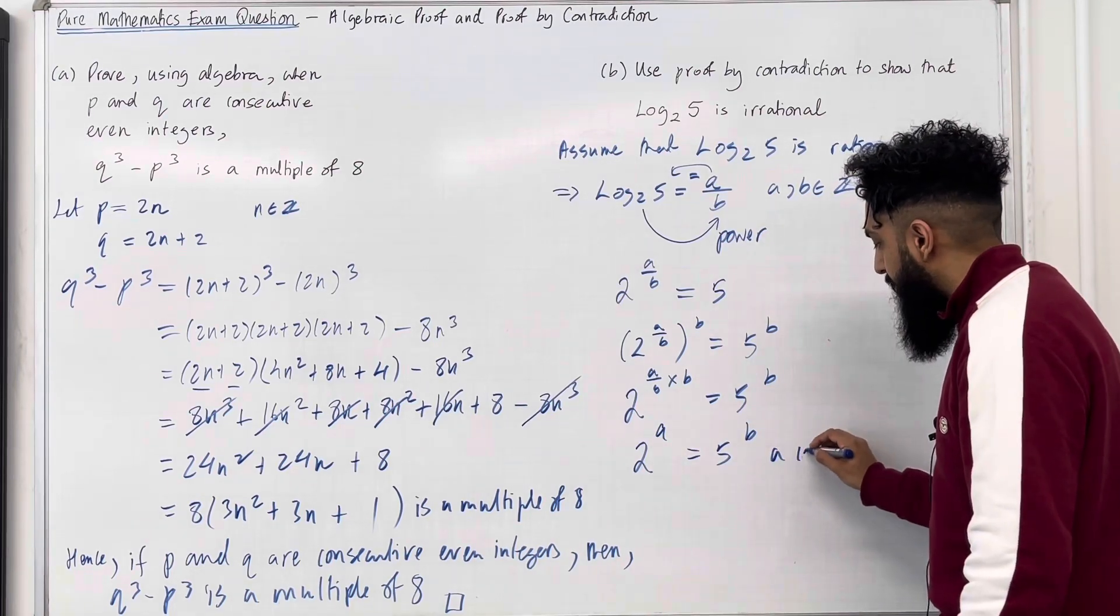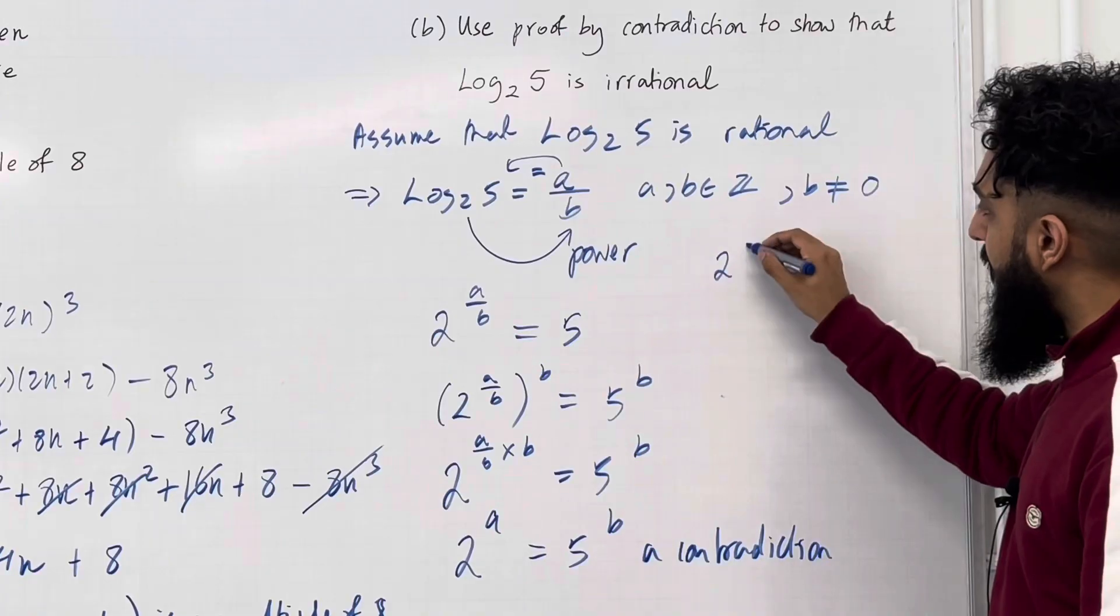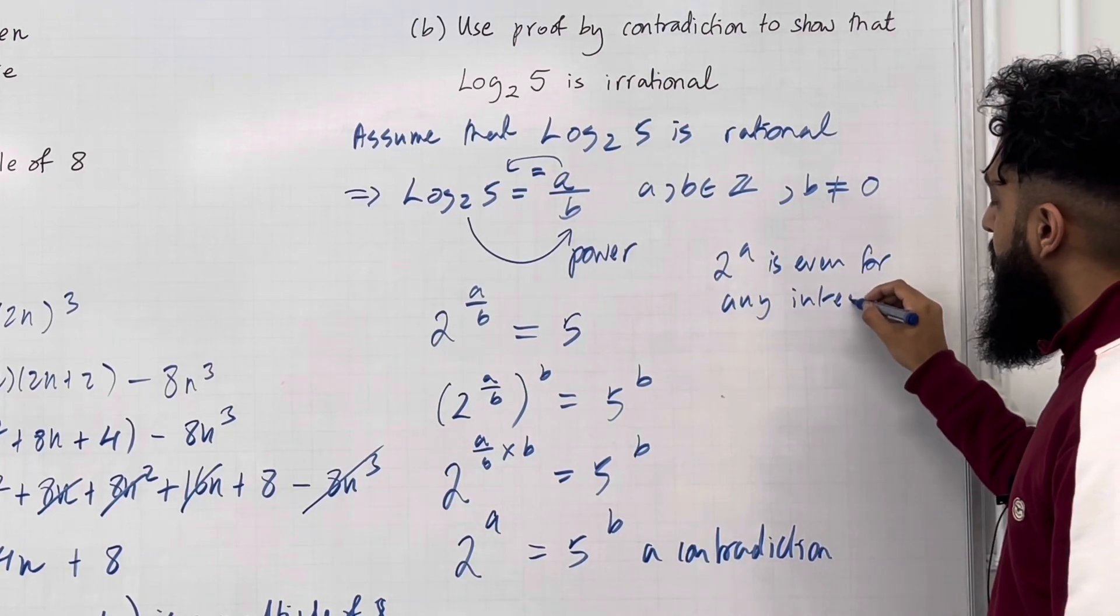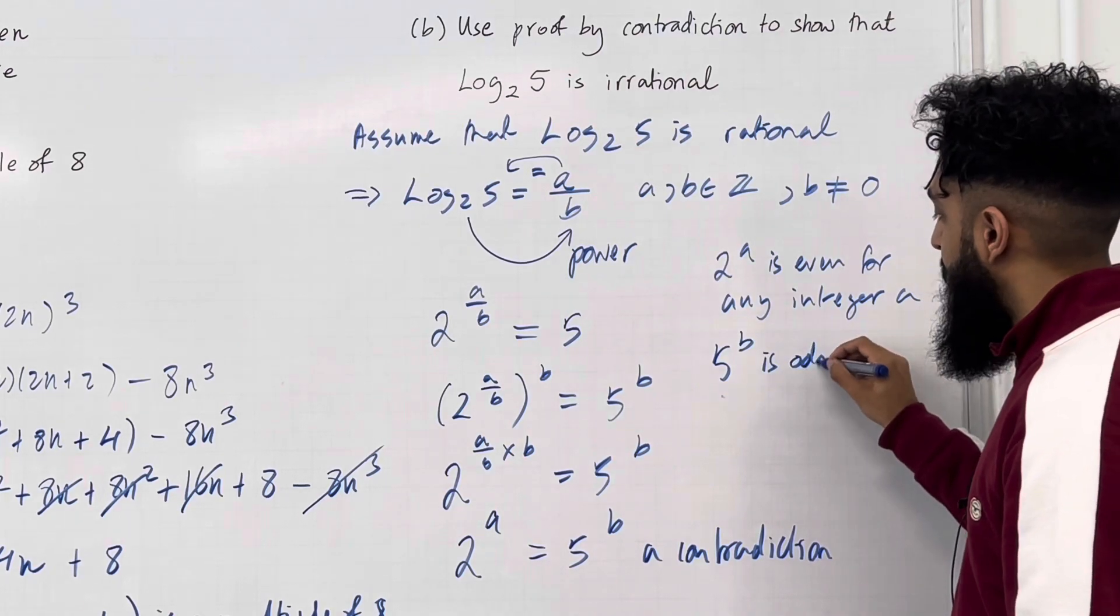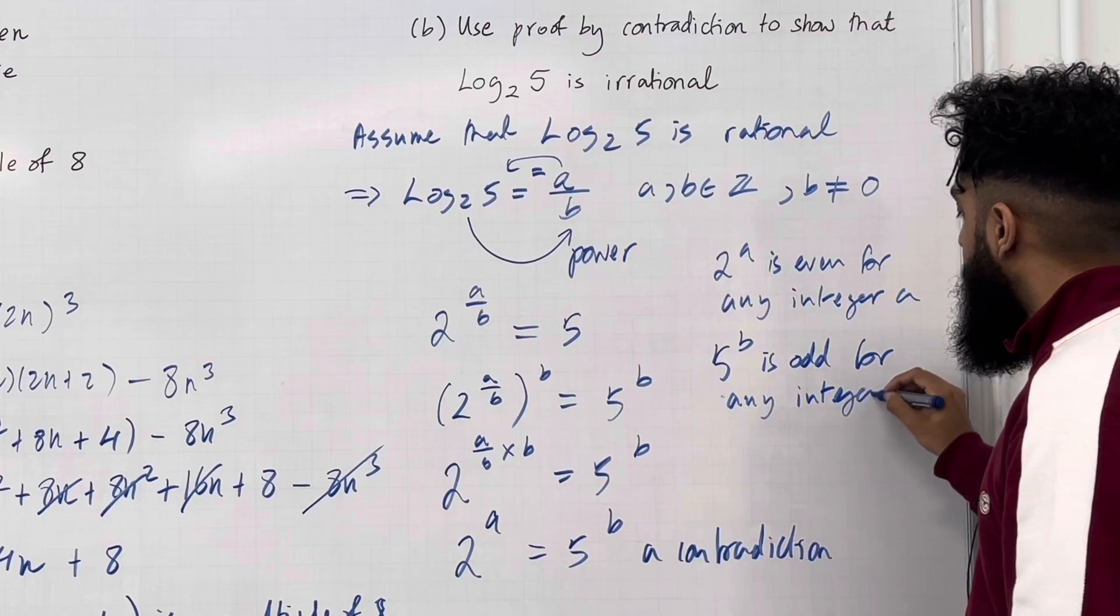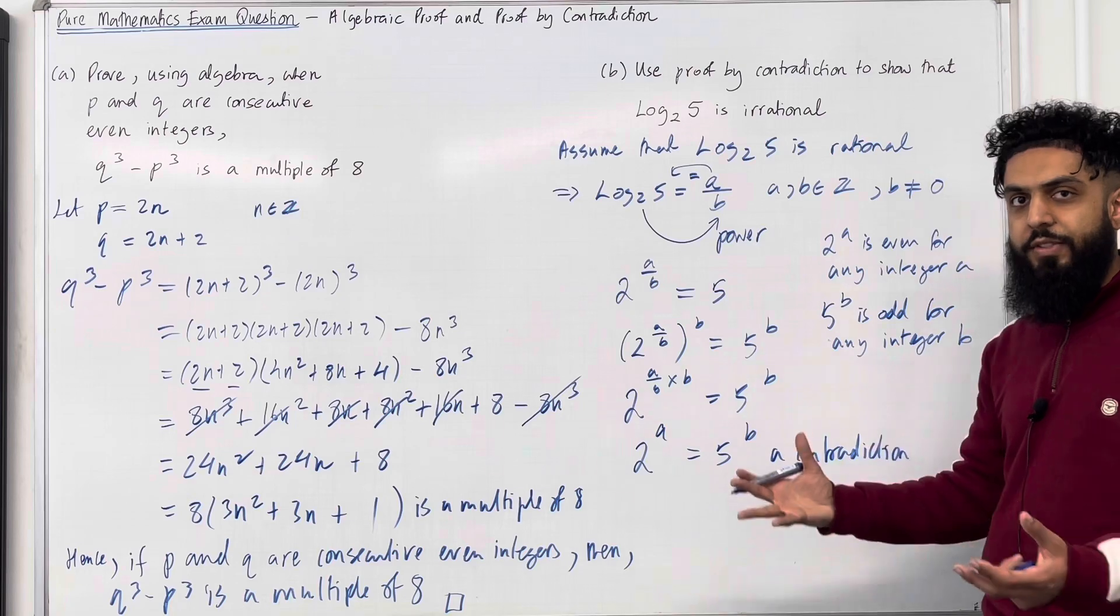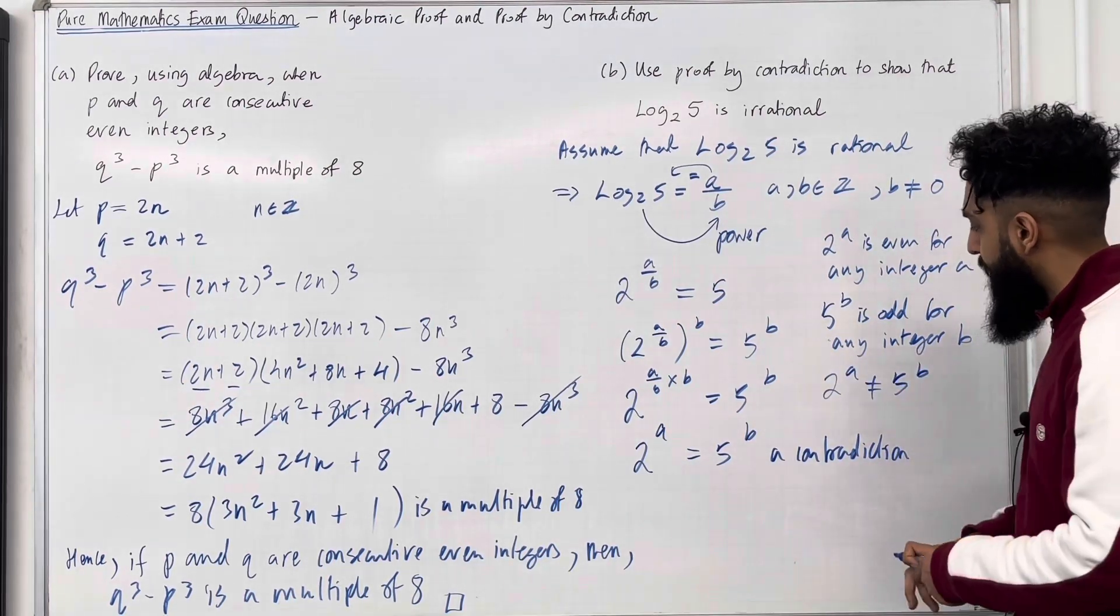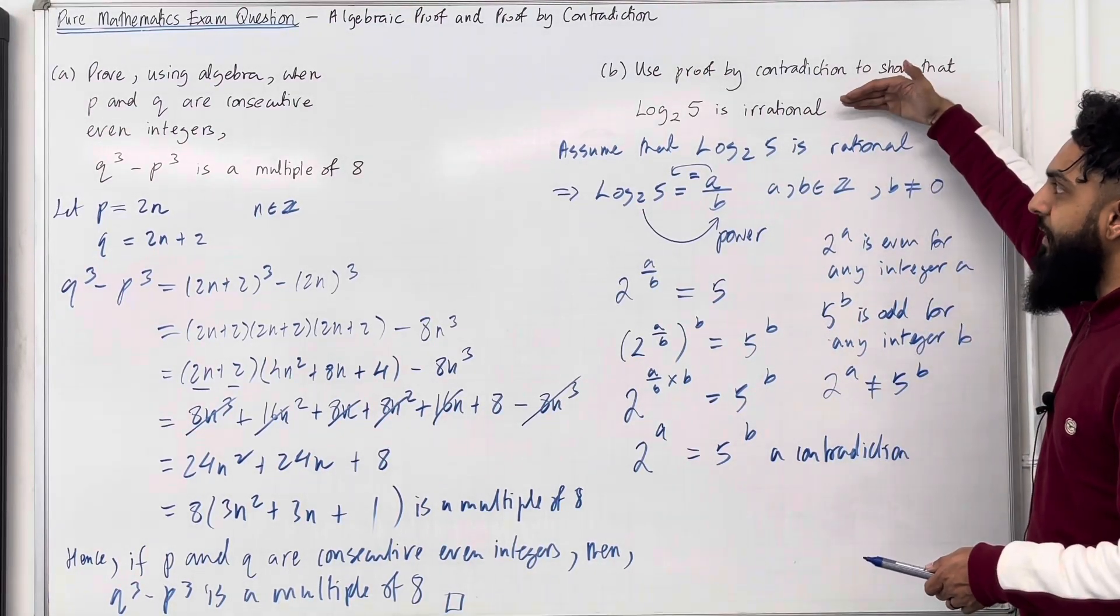Over here we've got a contradiction. Because 2 to the power A is even for any integer A, and we know that 5 to the power B is odd for any integer B. So we cannot have 2 to the power A equal 5 to the power B. That is nonsense. So 2 to the power A is not equal 5 to the power B. So that is our contradiction.